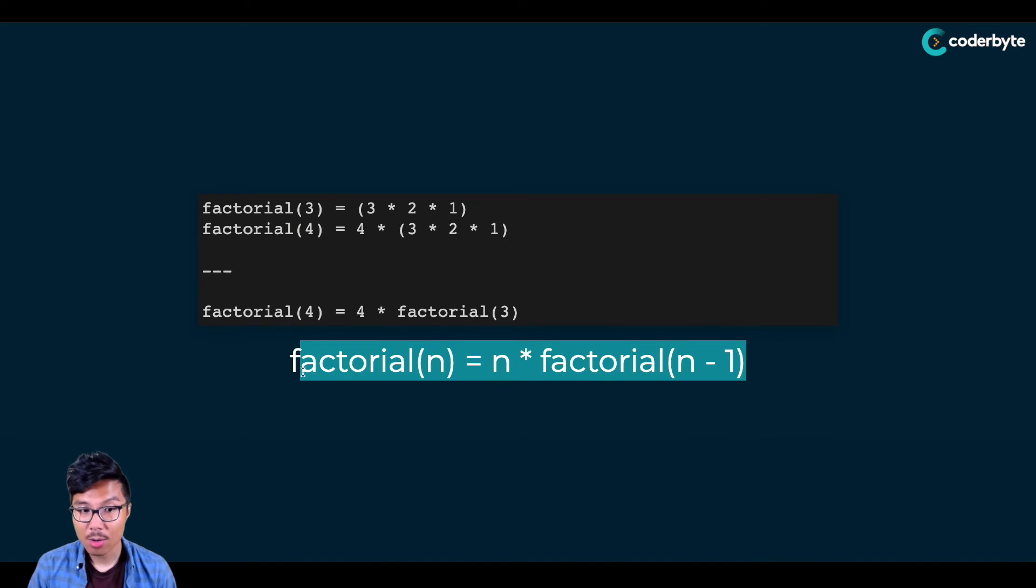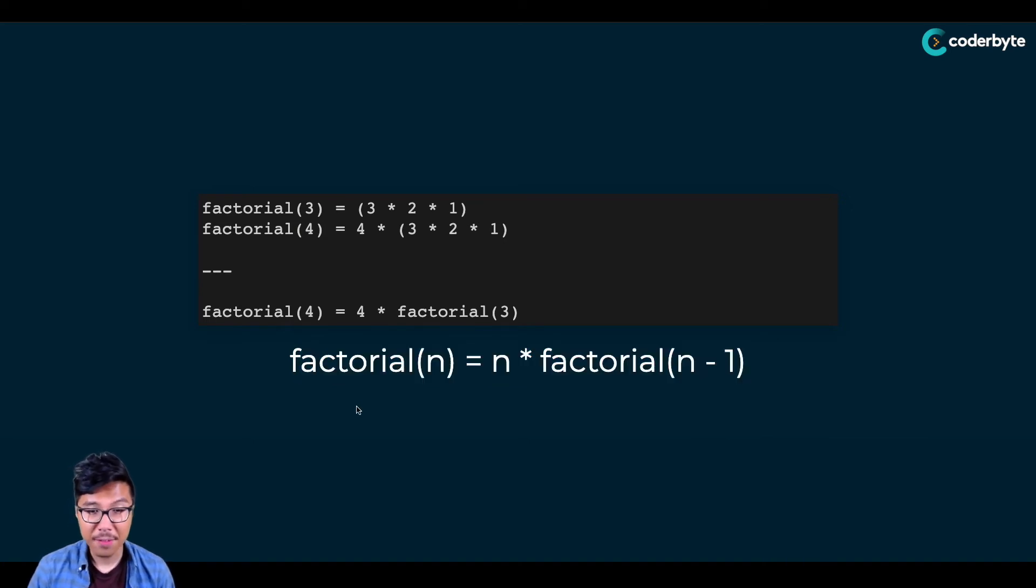We'll actually use this as our recursive case. We already identified factorial of one as our base case. If you're given some large value of n, you know that this will make progress eventually toward one. This would make n smaller and smaller.